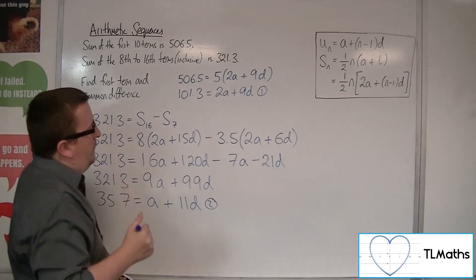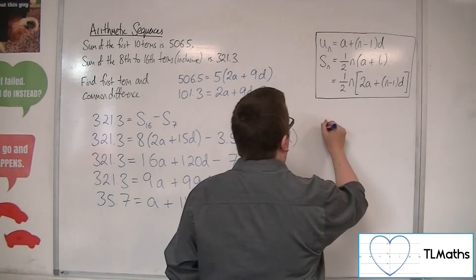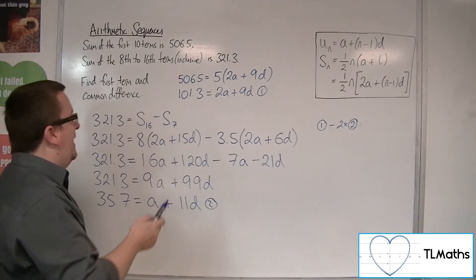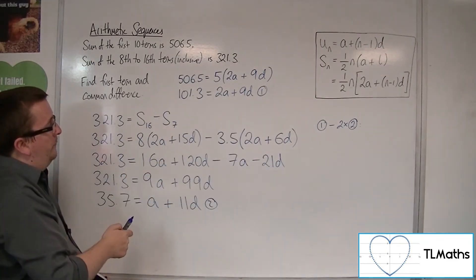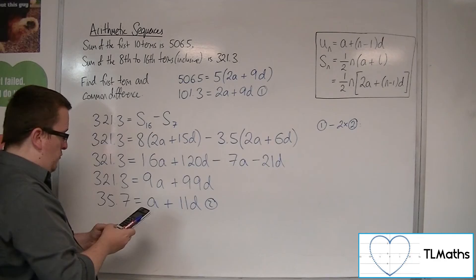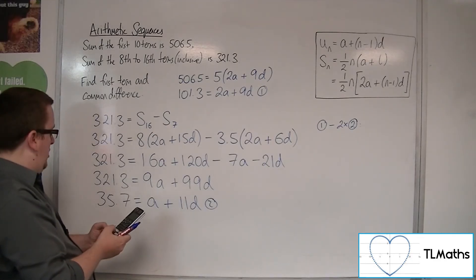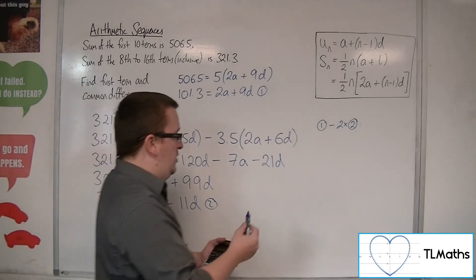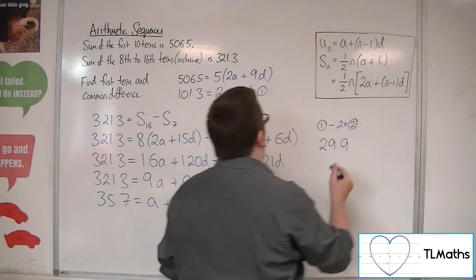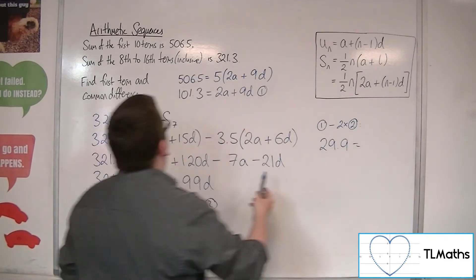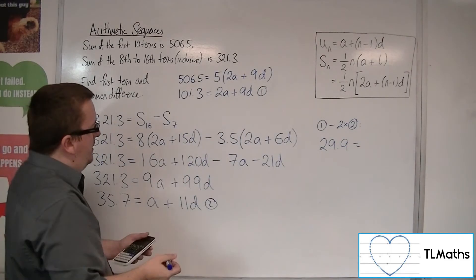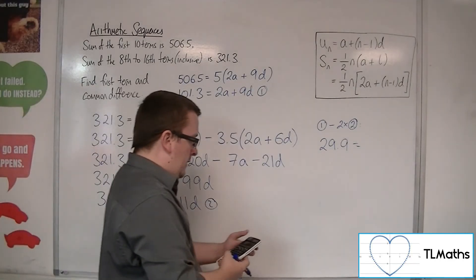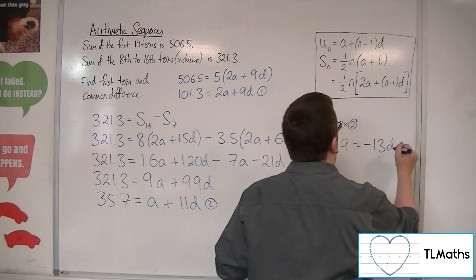So now, if I do equation number 1 and take away 2 lots of equation number 2, okay, because that will allow me to cancel the a's, I've got this 101.3 take away 2 lots of 35.7, which gets me 29.9. I've got the 2a take away 2a, and I've got 9d, so 9 take away 2 lots of 11, which gets me minus 13, so minus 13d.